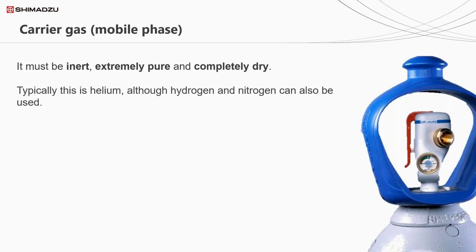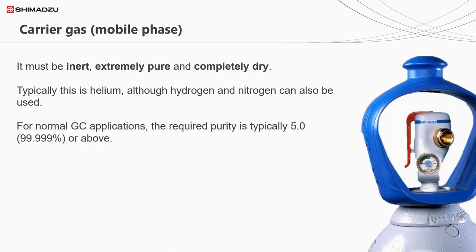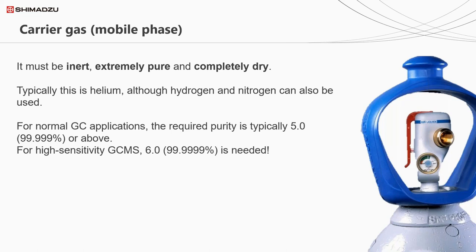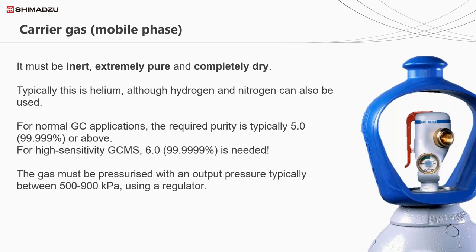Generally speaking, we use helium as a carrier gas for GC, although hydrogen and nitrogen are now more popular due to their availability and low cost. For your carrier gas, you do want it to be pure - typically we would say a purity of five nines, that's 99.999% or above. In some cases where you're doing very high sensitivity work or working with a GC mass spec, six nines is preferable. The gas must also be pressurized, so your gas cylinder will need to outlet the gas at somewhere between 5 and 900 kilopascals using a regulator.